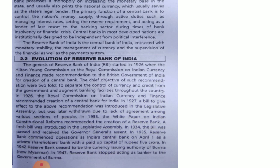In 1934, the bill was passed and received the Governor General's assent. In 1935, the Reserve Bank of India commenced its operations as the Indian Central Bank on April 1. It operated as a private shareholder bank with a paid-up capital of rupees 5 crores.